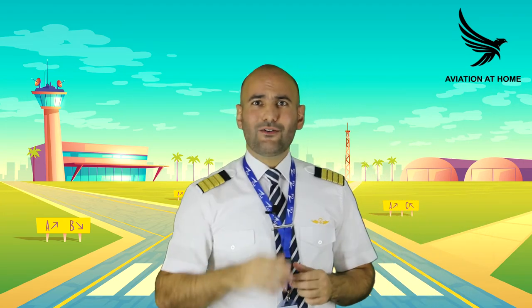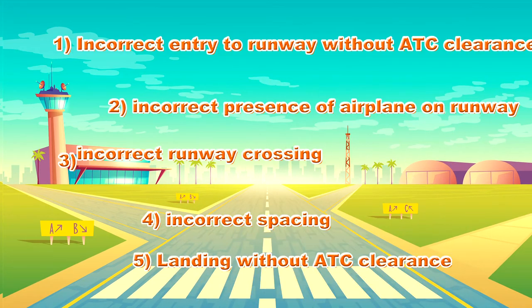The most common runway incursion types according to reports available up to 2016 are as follows. First: incorrect entry of an aircraft or vehicle onto the runway protected area without or contrary to ATC clearance, or due to incorrect ATC clearance. Second: incorrect presence of a vehicle or aircraft onto the runway protected area.